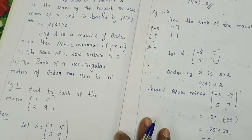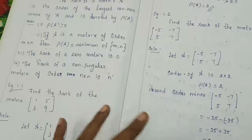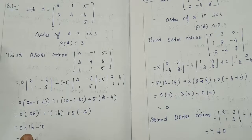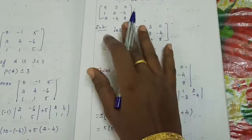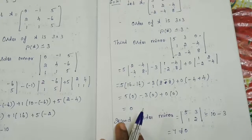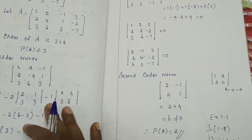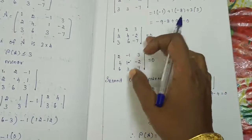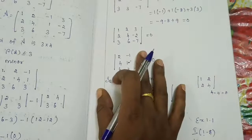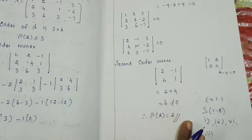Rank of a zero matrix is 0. Rank of a non-singular matrix of order n cross n is n. For finding rank: for a 2 cross 2 matrix, if the second order minor is not equal to 0, conclude the answer. If it is 0, find the first order minor. For a 3 cross 3 matrix, start with third order minor.